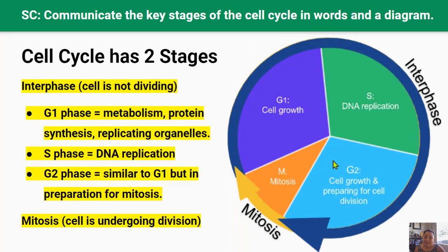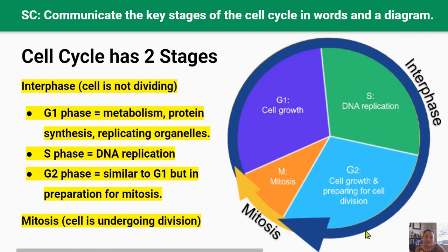The cell cycle is the term given to the life cycle of a cell, and it's an ordered sequence of events that occur in a cell as it prepares to divide for cell division and duplication. There are two main stages in the cell cycle: one, the interphase, and two, mitosis.